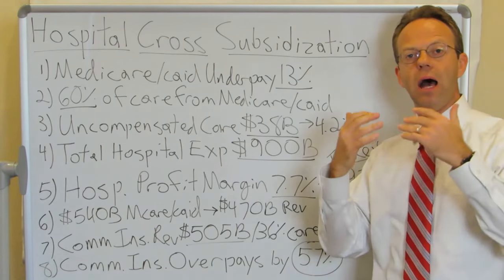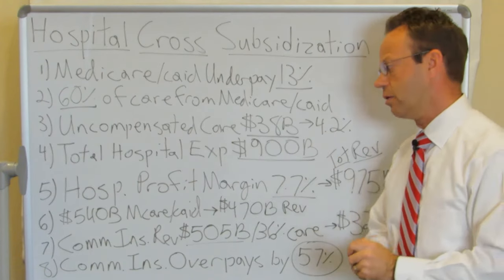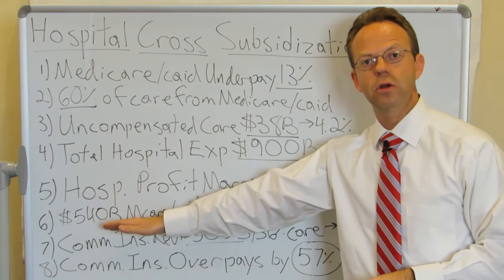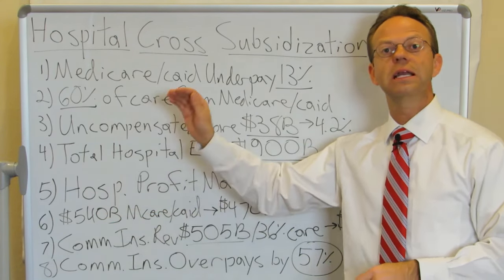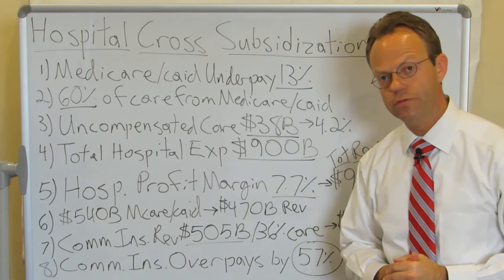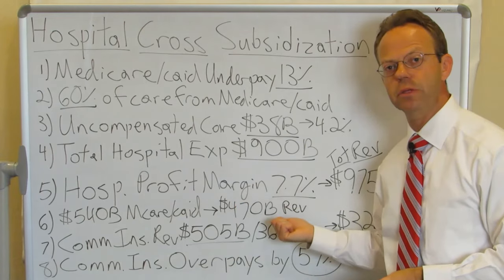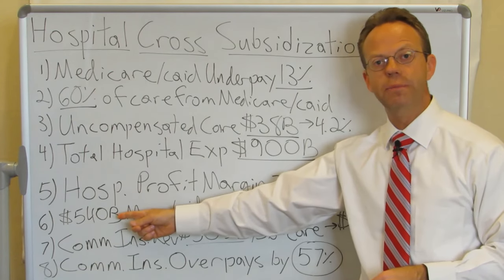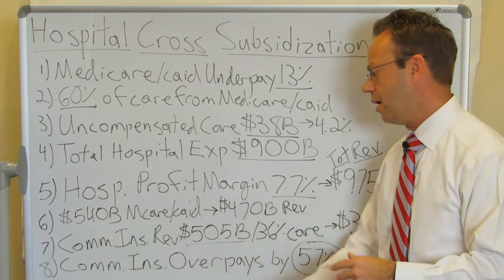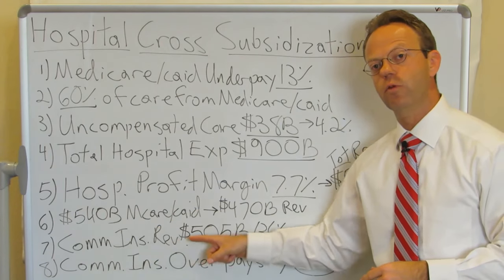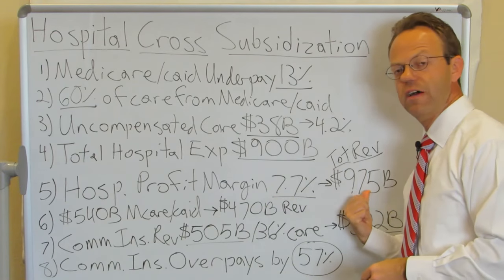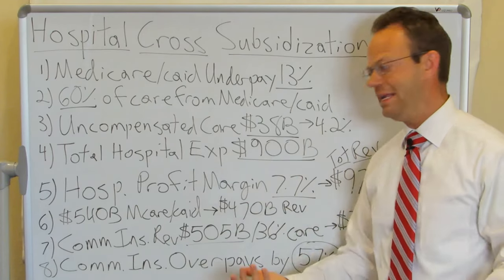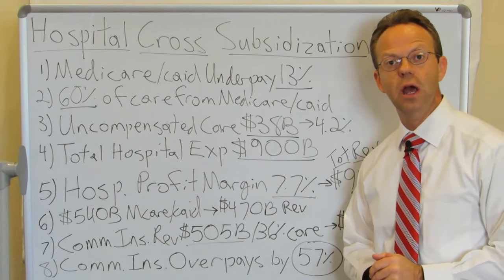Let's break it down by Medicare and Medicaid in specific dollar amounts. $540 billion of hospital care was from Medicare and Medicaid, but hospital revenue from Medicare and Medicaid was only $470 billion — because Medicare and Medicaid undercompensate. They only paid $470 billion for $540 billion of care. That means commercial insurance revenue for those hospitals was $505 billion: $975 billion total minus $470 billion from Medicare and Medicaid, with uncompensated care paying nothing.